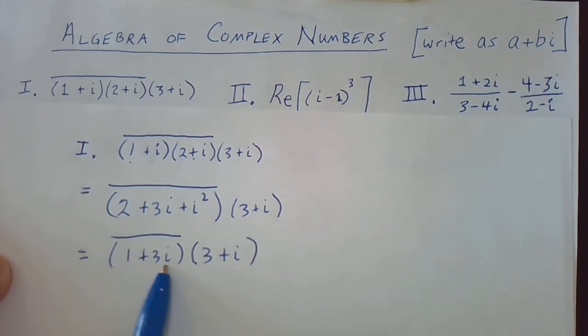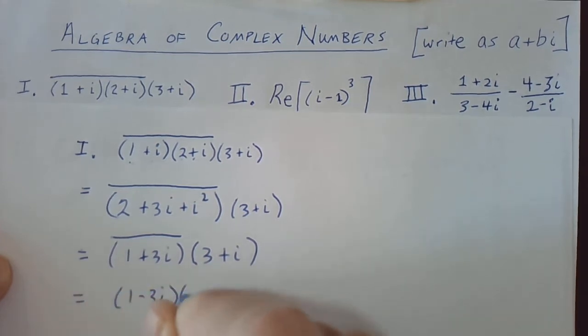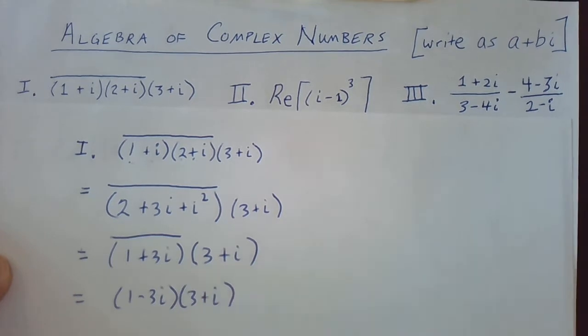Well, the complex conjugate of 1 plus 3i is simply 1 minus 3i. And now all we need to do is multiply together again using foil to find out what this is equal to.